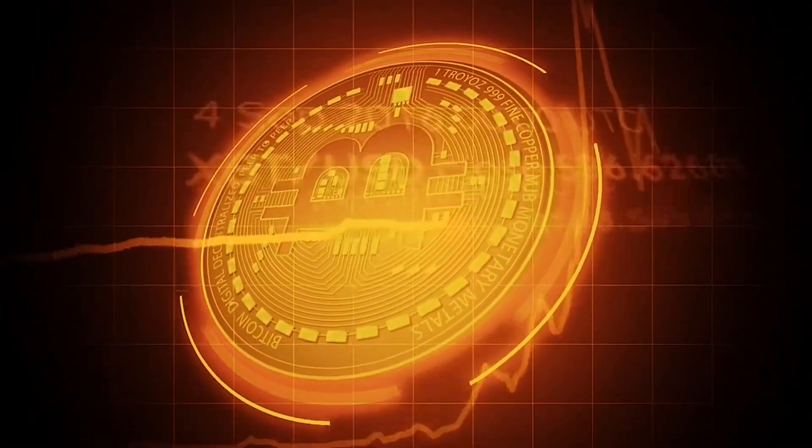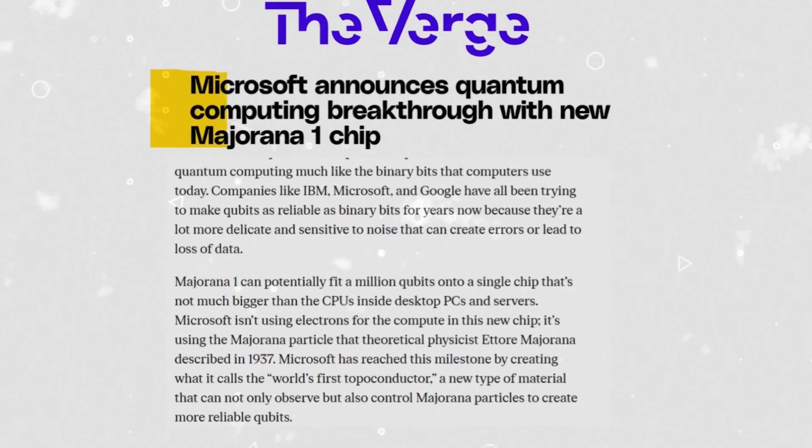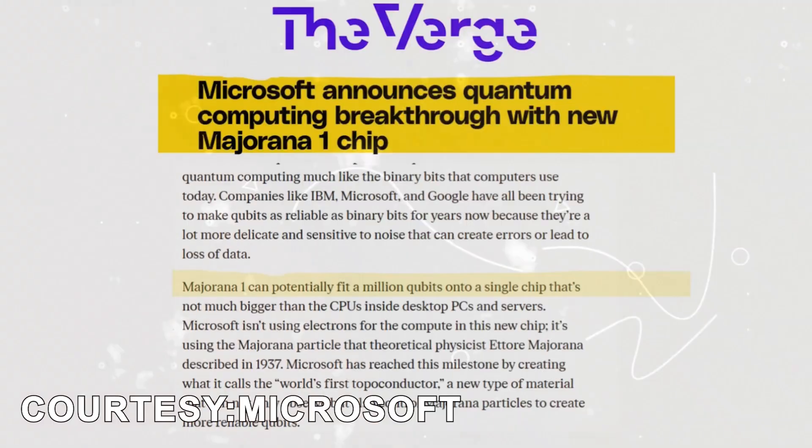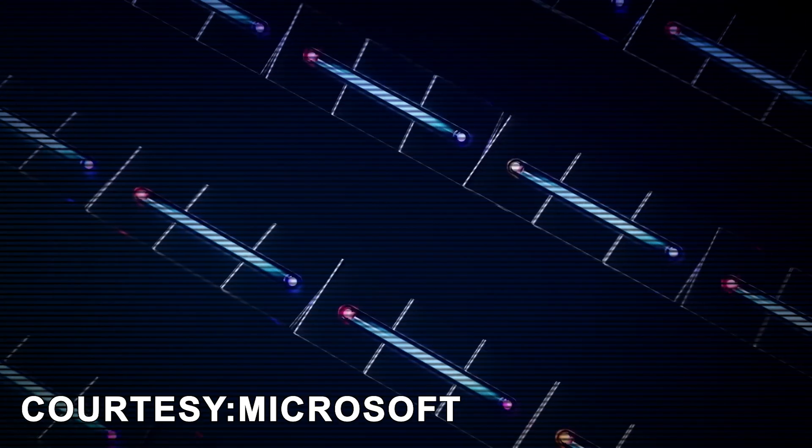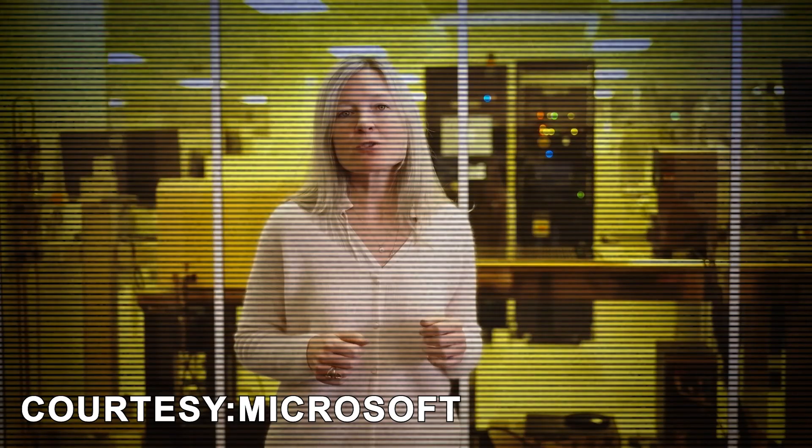And now with Microsoft Majorana One chip, they are aiming to create a quantum computer with over one million qubits. We're able to build an entirely new quantum architecture, the topological core, which can scale to a million topological qubits on a tiny chip.